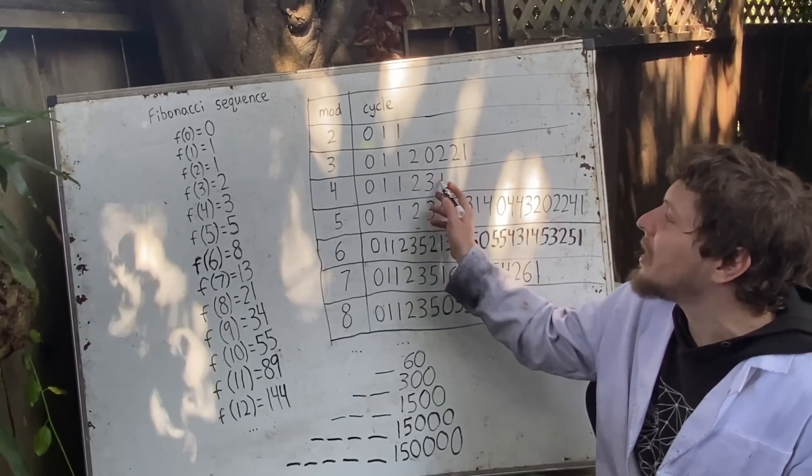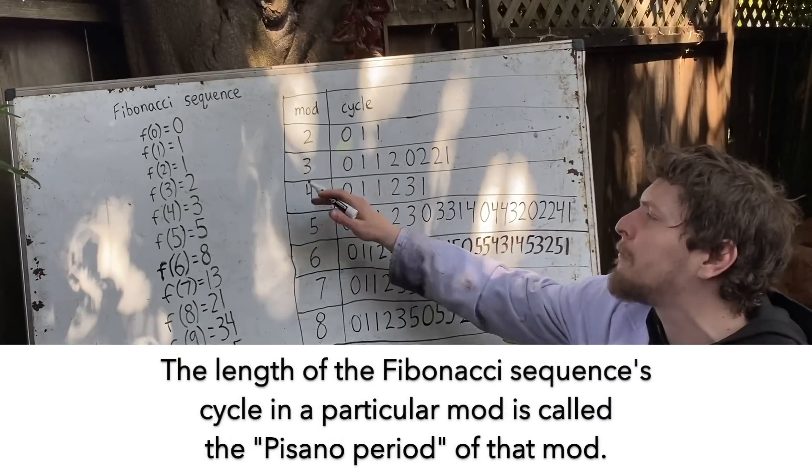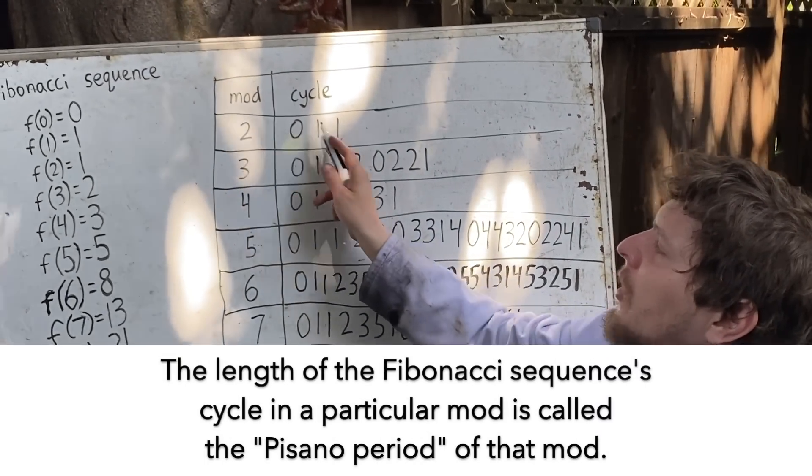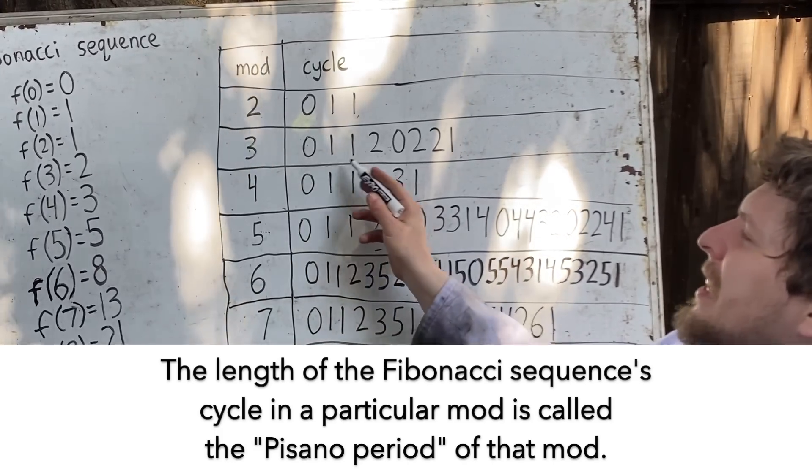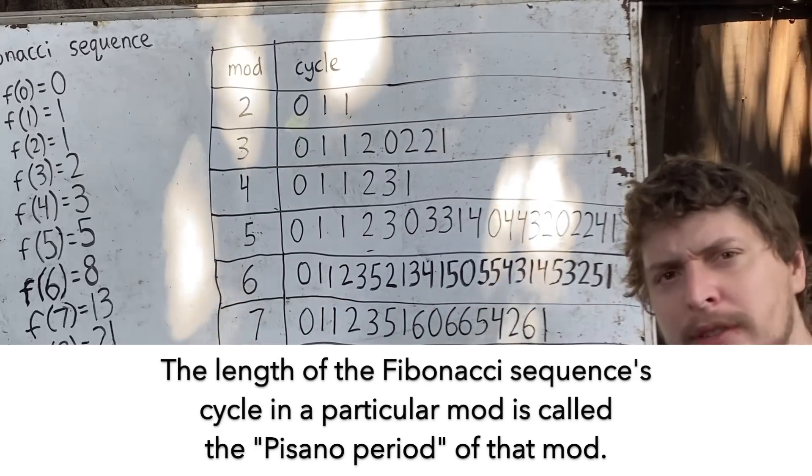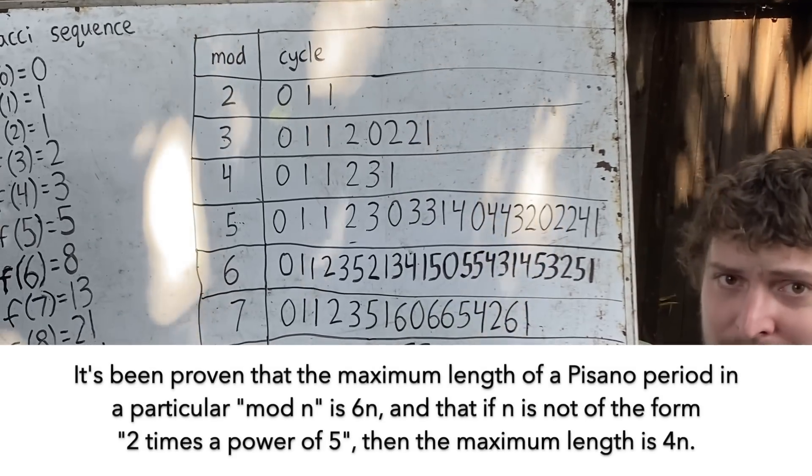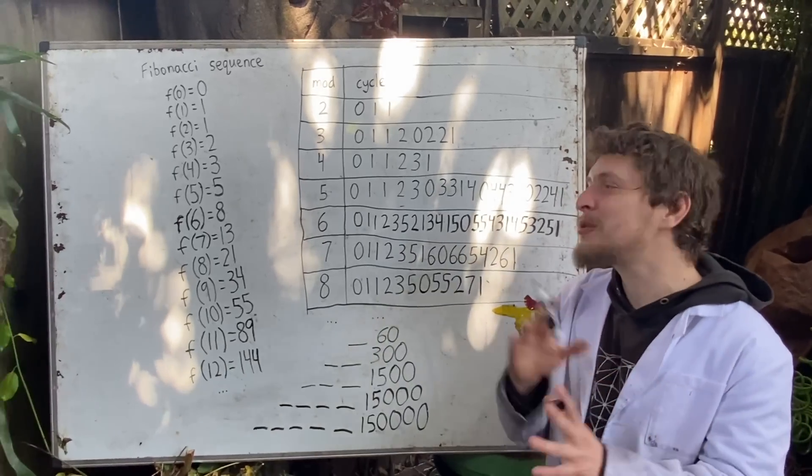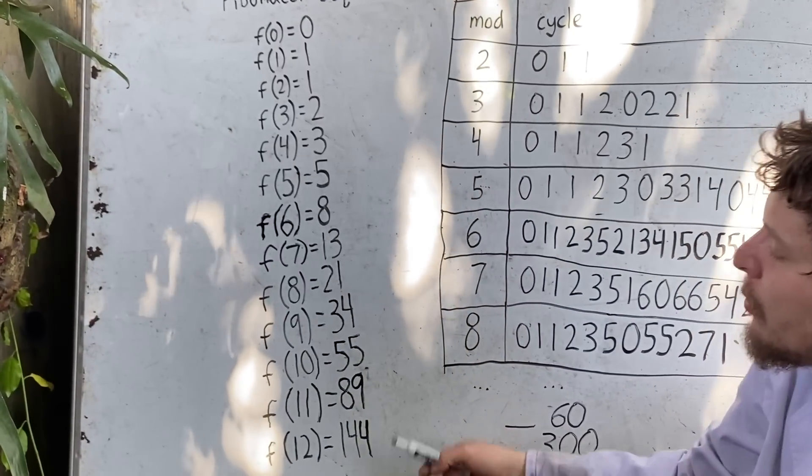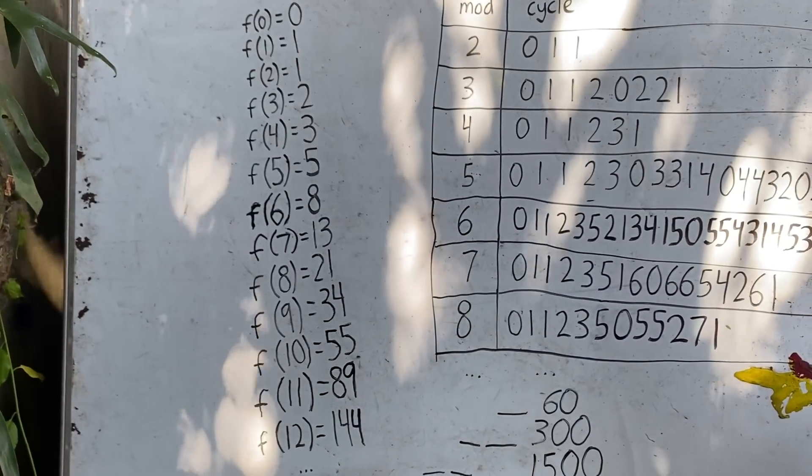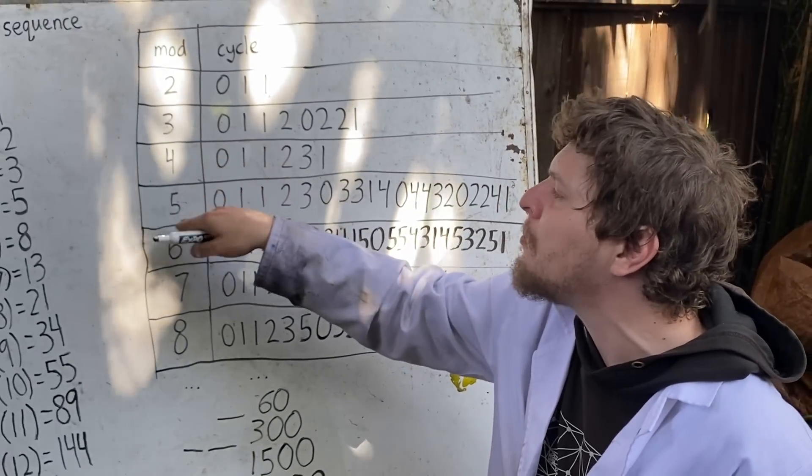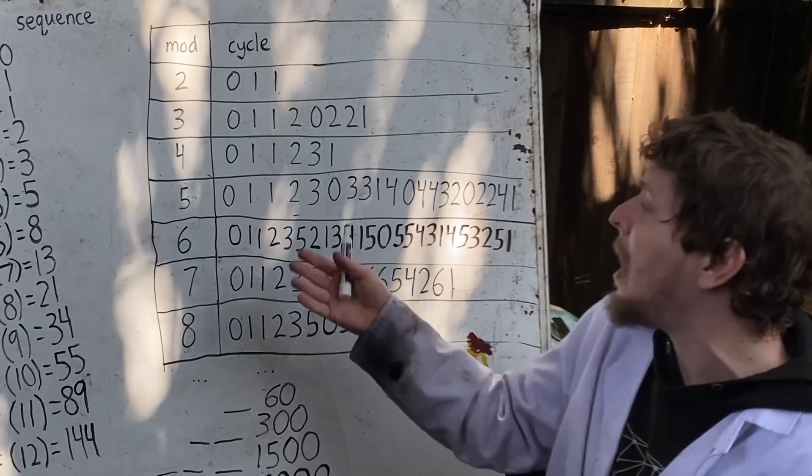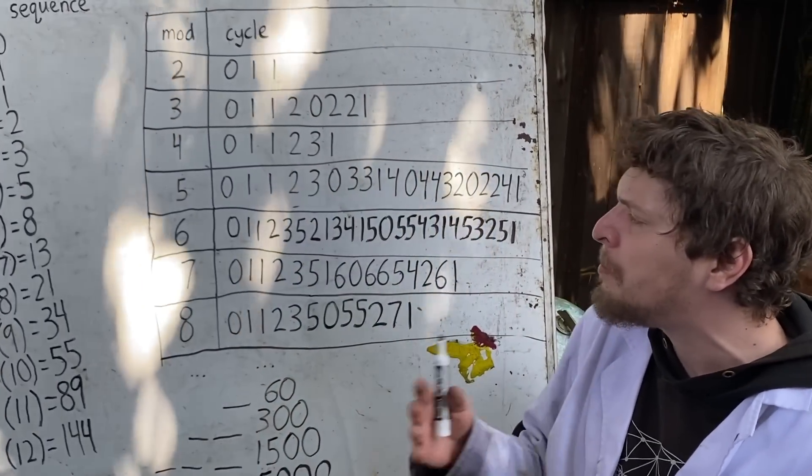If you look at the cycles and how many numbers are in them for different mods, other patterns emerge also. Like after mod 2, all further mods will have an even amount of numbers in their cycle. And here are some other traits that mathematicians have proven about these cycles. In general, it's pretty cool that you can take a sequence that spirals larger and larger and interpret it in these clock-like mods to find cycles within it that tell you information about how it would look in a variety of different bases.